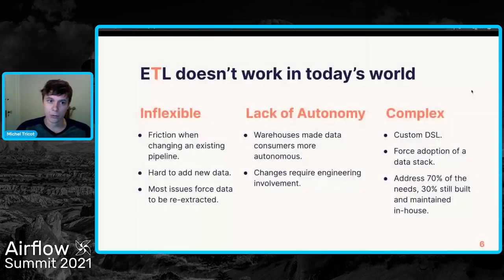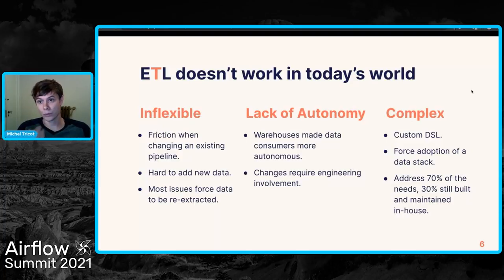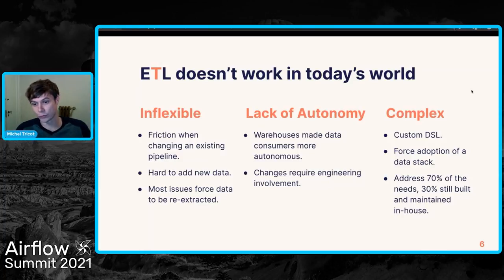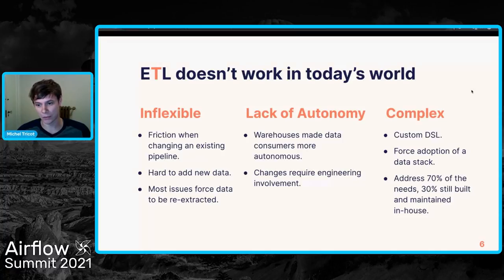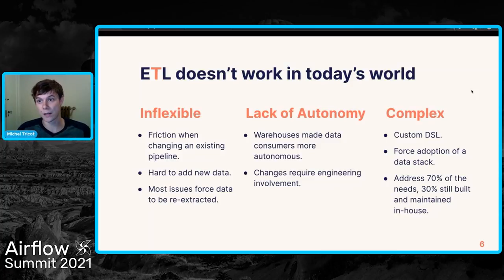The problem with ETL is that it is very inflexible. The transformation is so tied to the extraction that if you want to modify your transformation — add new data types, new fields, or new records — you need to reload all of the data because you never have the raw data available. Also, these transformation systems are generally very complex, meaning people always have to rely on data engineers or software engineers to manage them.